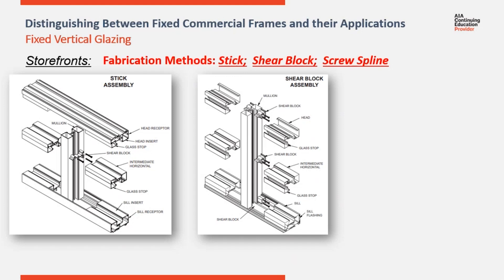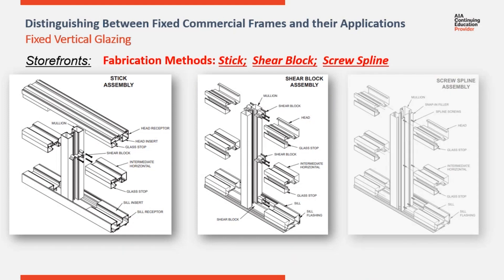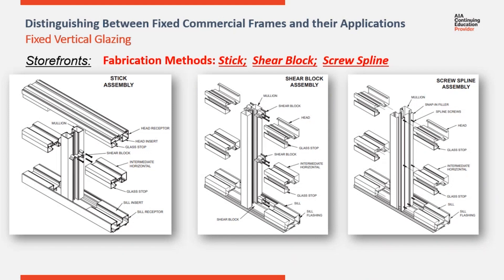The far more common and economical method is Screw Spline. This consists of two-piece split verticals, which allow you to pre-build columns or modules off-site and carry them assembled to the project. The advantage of that is that we are shifting more labor to the shop and out of the field.